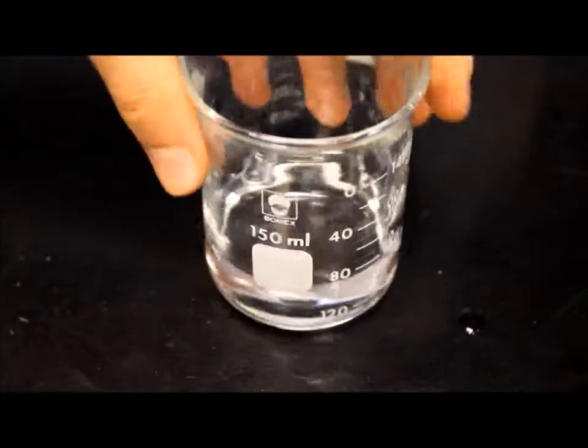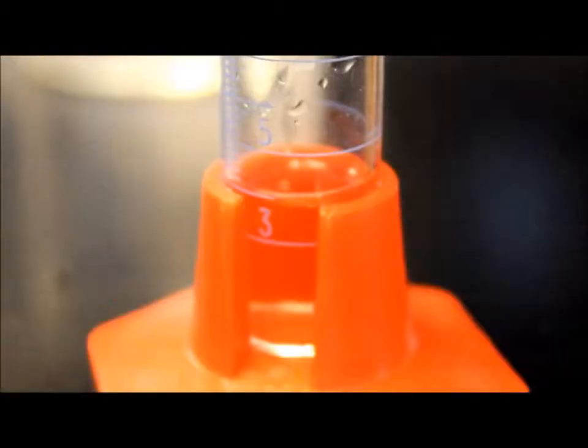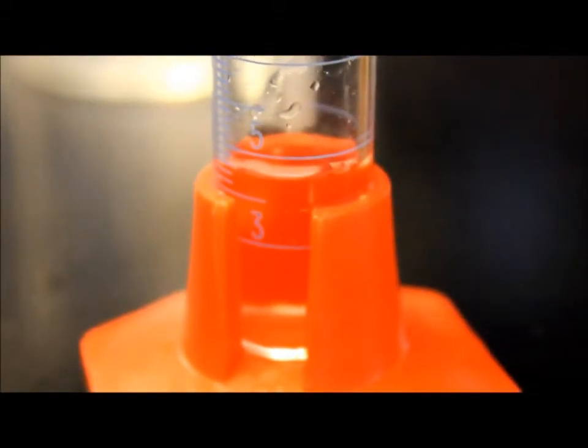Use a different graduated cylinder for each measurement to avoid contamination. Finally, measure out 5 milliliters of solution B and add this to the last small beaker.